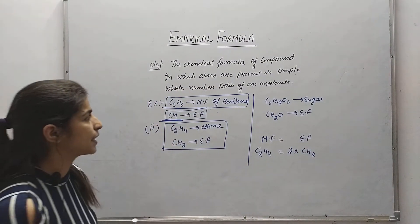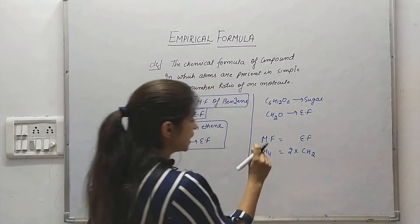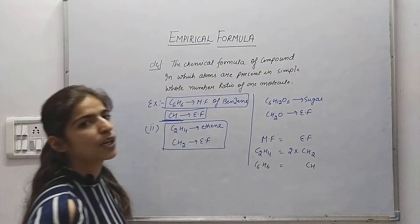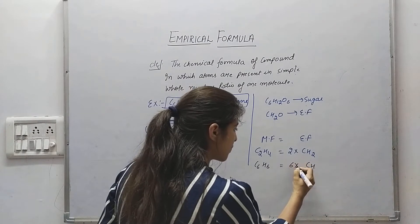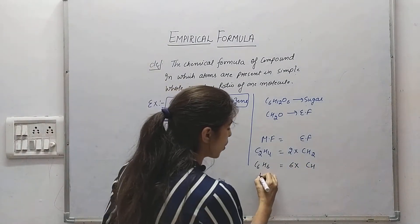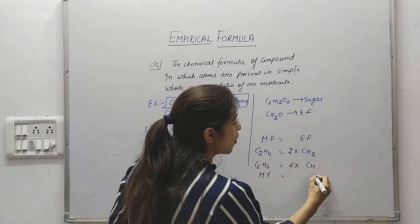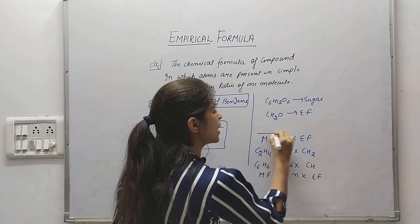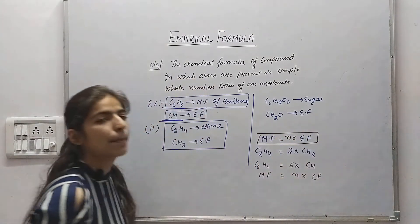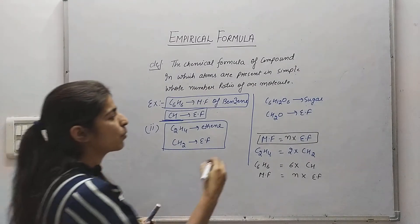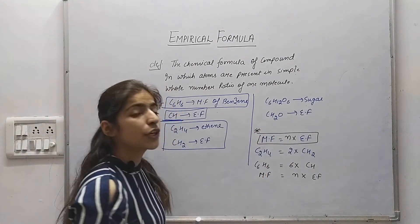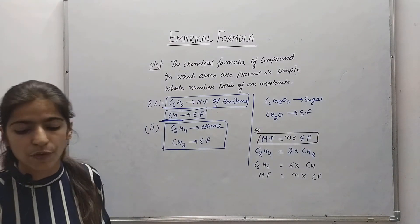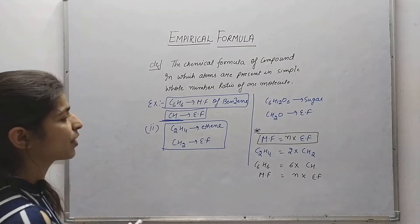Another example: C6H6 — the molecular formula is the empirical formula multiplied by a factor. The general relation is: molecular formula = n × empirical formula. To find the molecular formula, you first need to determine the empirical formula.